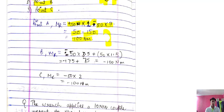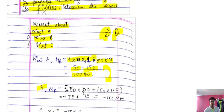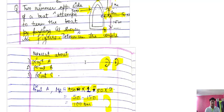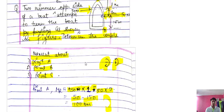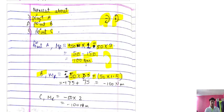When talking about point B: 50 into 1.5 (anticlockwise, positive) plus 50 into 3.5 (clockwise, negative). Total distance to the other force is 2 + 1.5 = 3.5 meters. So: 75 minus 175 = minus 100 Newton meter.